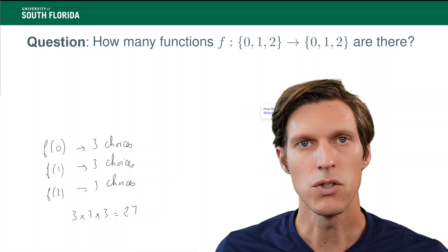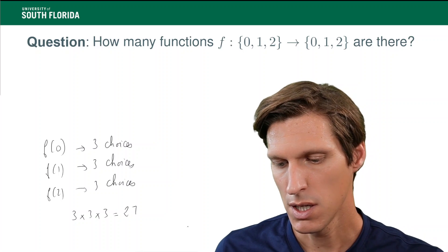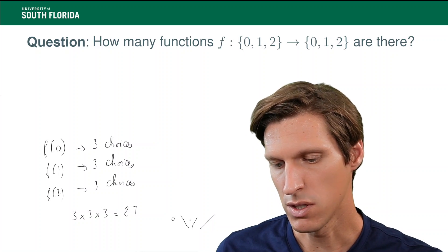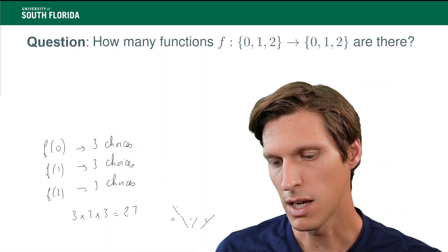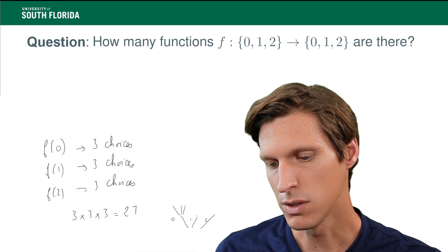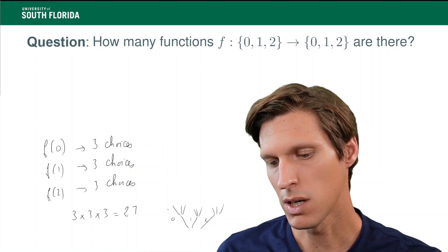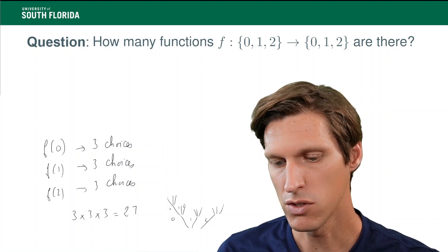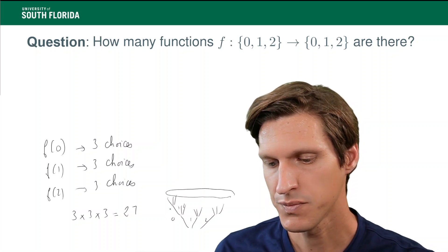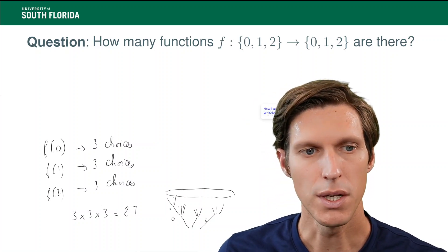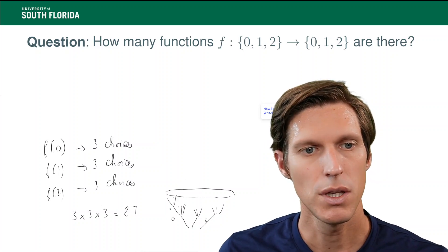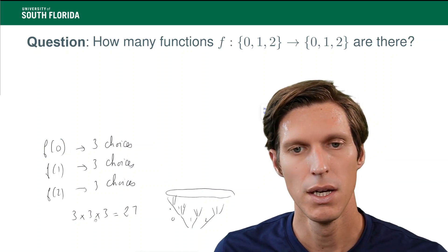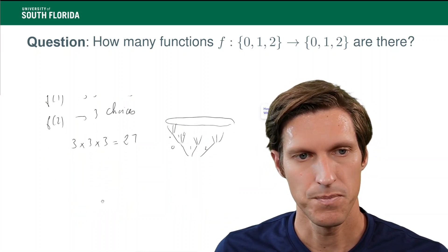Now, one way to also visualize it is if you put things in kind of a tree. So, you could look at, if f of 0 is a 0, or if it's a 1, or if it's a 2, and then f of 1 will yield 3 more branches in the tree, a 0, 1, or 2, etc. And then f of 2 will yield more branches. And you can convince yourself that the number of leaves here of your tree is going to be 27 as well. But I really like to see it that way, just saying, how many choices for f of 0, f of 1, f of 2, and arguing that these are independent.